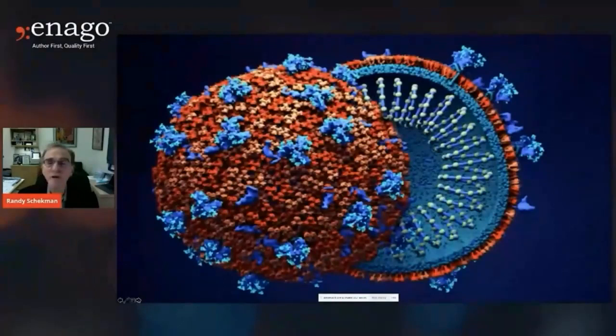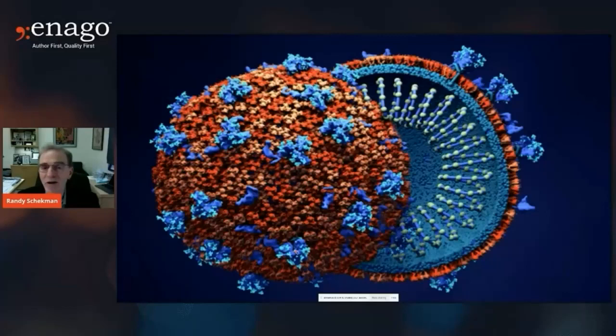Let's begin with a topic of current interest. This is a picture — a cartoon, a view of the outside and a slice of the inside of the coronavirus. Coronavirus looks very much like a carrier found in all cells that have a nucleus, a carrier called a vesicle, but it's been designed by evolution